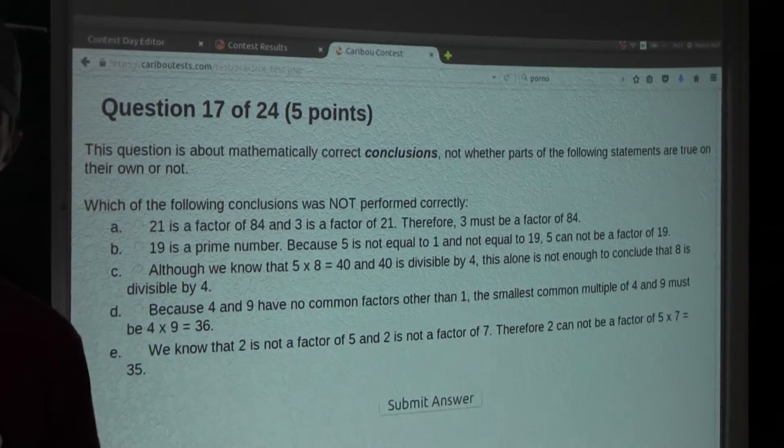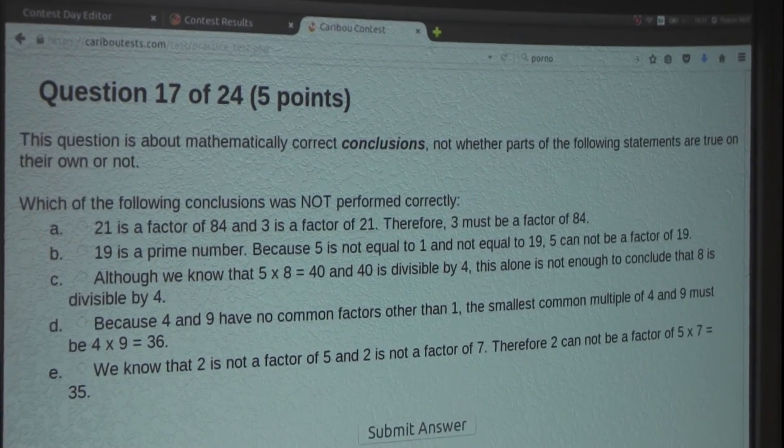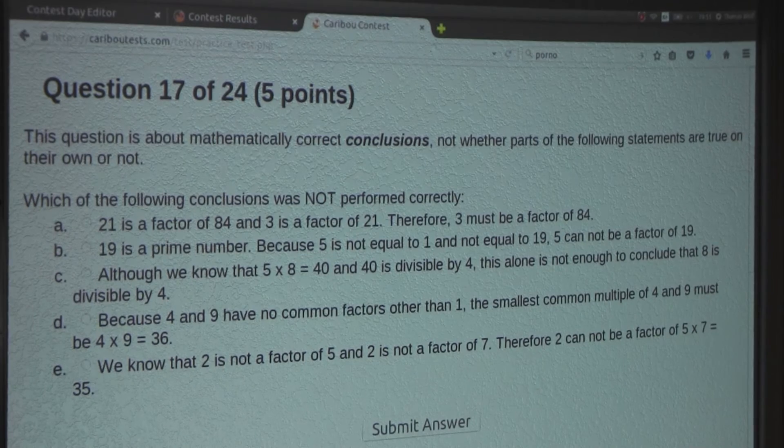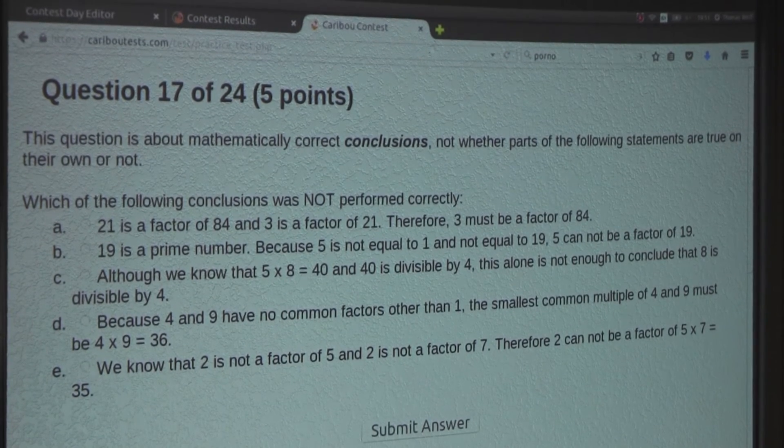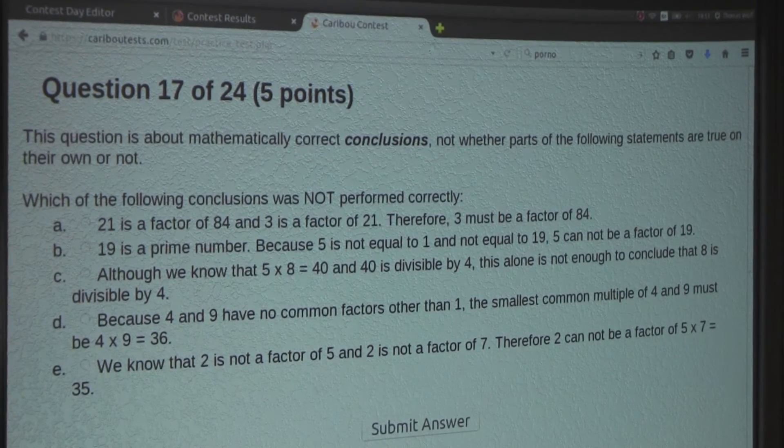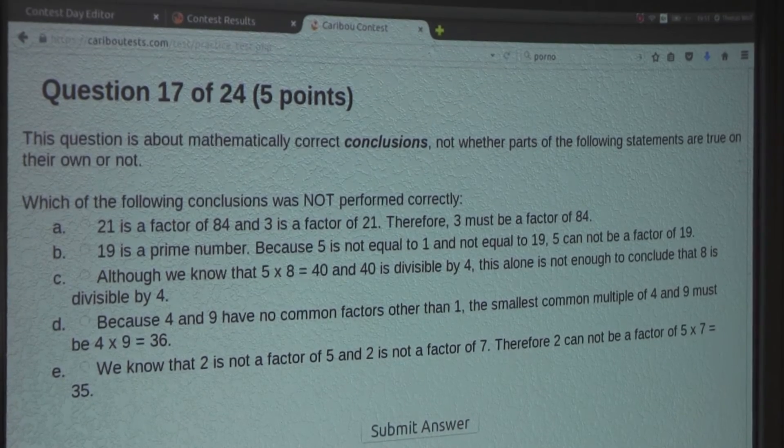Okay, and now finally, option E. We know that 2 is not a factor of 5, and 2 is not a factor of 7. Therefore, 2 cannot be a factor of 5 times 7 is 35.